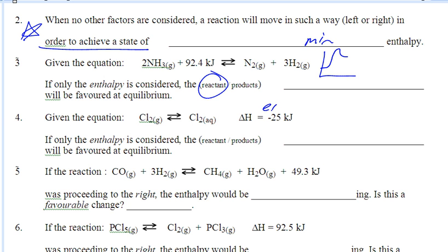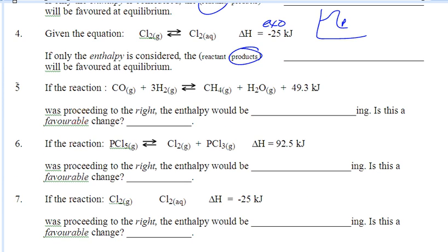Question four — this is exothermic. Think of this graph in your head. The products are the lowest. So if only enthalpy is considered, the products are going to be favored in this reaction, in this equilibrium. To say the same thing a different way — here's the reaction, it's exothermic. If this reaction was proceeding to the right, enthalpy would be decreasing, and if enthalpy is decreasing, that is a favorable change. It wants to go to the side with the least amount of energy.